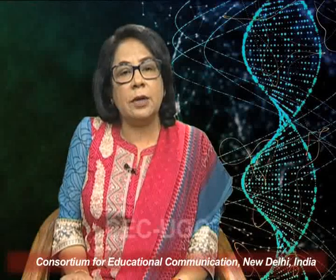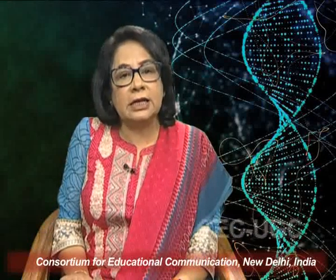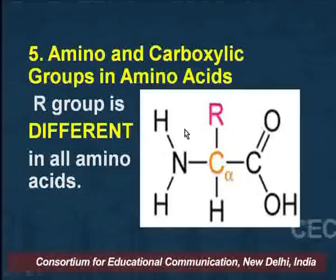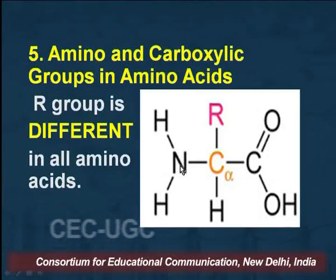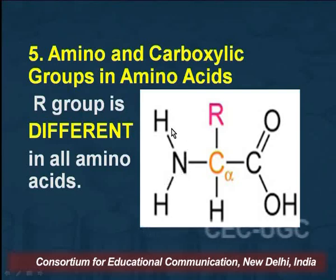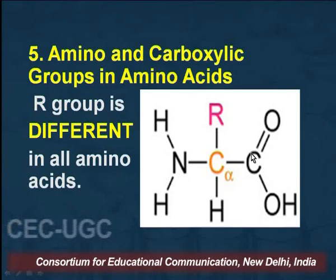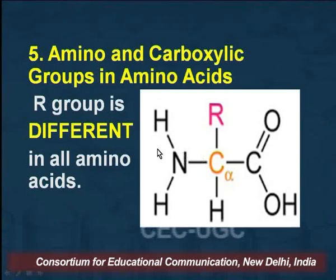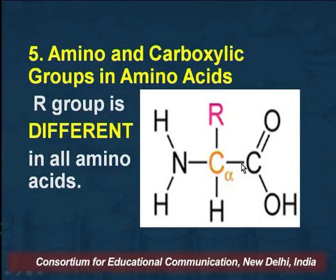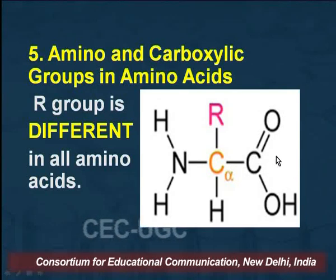Why are they amphoteric in nature? In an amino acid, an internal acid-base reaction takes place in which the amino group acts as a basic group and the carboxyl group acts as an acidic group. As a result of this internal acid-base reaction, the amino group occurs as NH3+ and the carboxyl group occurs as COO−.